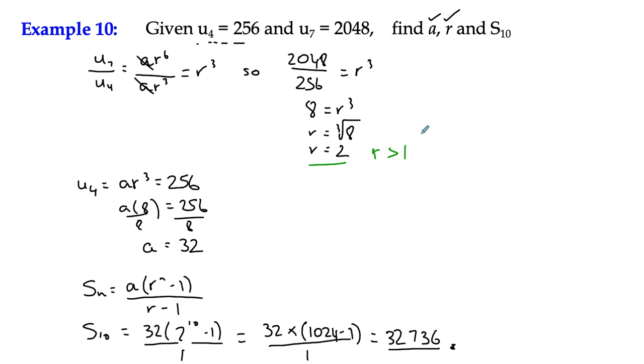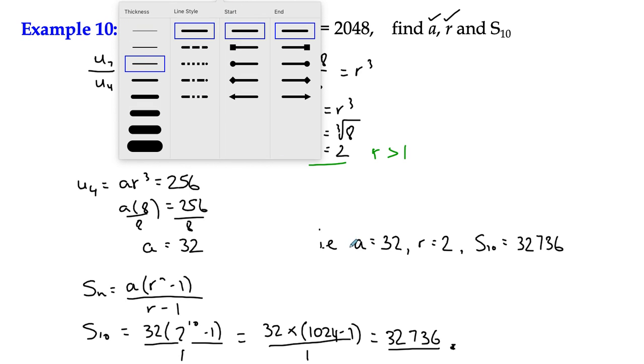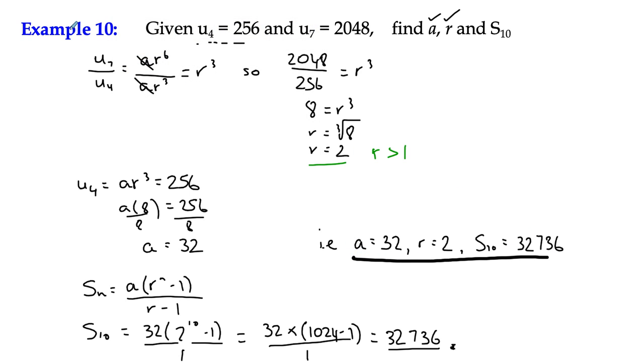We've got lots of different bits. We were asked to find three of them, so in conclusion, we can write them all down. a equals 32, r equals 2, and S10 is equal to 32,736. There is the answer.